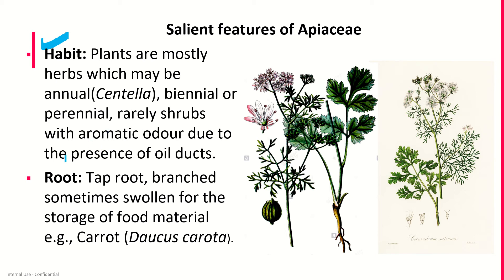The flowers are pedicillate, meaning the flowers normally bear a stalk. They are bracteate in Centella or ebracteate in Foeniculum. Perfect, complete, actinomorphic and in some zygomorphic — due to enlargement of the outer petals of the marginal flowers of the umbel in Coriandrum. Hermaphrodite, meaning both sexes are observed. Pentamerous, epigynous, with a disc present.